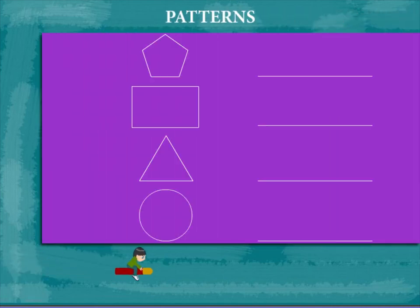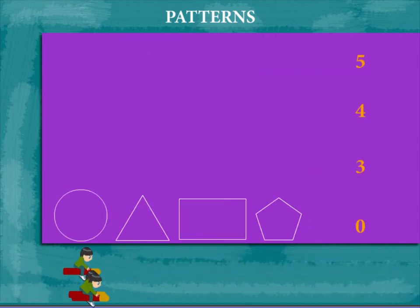Patterns. Here are some shapes: a pentagon, a rectangle, a triangle, and a circle. A circle has zero sides, a triangle has three sides, a rectangle has four sides, and a pentagon has five sides.